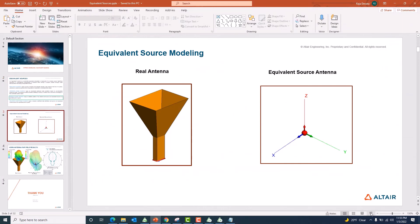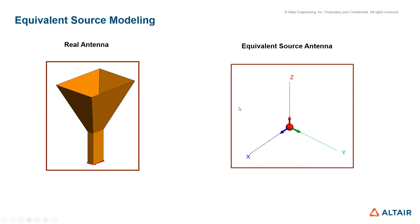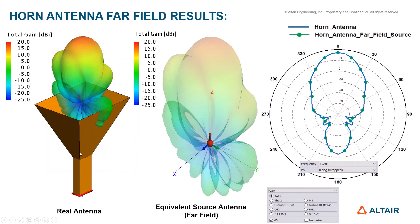Going back to the presentation slide: we have the real antenna which can be replaced by the equivalent source using the FFE file. We simulated the real antenna, got the far field patterns, requested the native FFE file, and used it in the CAD FEKO session to obtain the far field pattern. All results are matching very well, so we no longer require the real horn antenna for complex analysis problems — we just need the far field data. This saves a lot of computational time. Thank you, hope you enjoyed this demonstration.